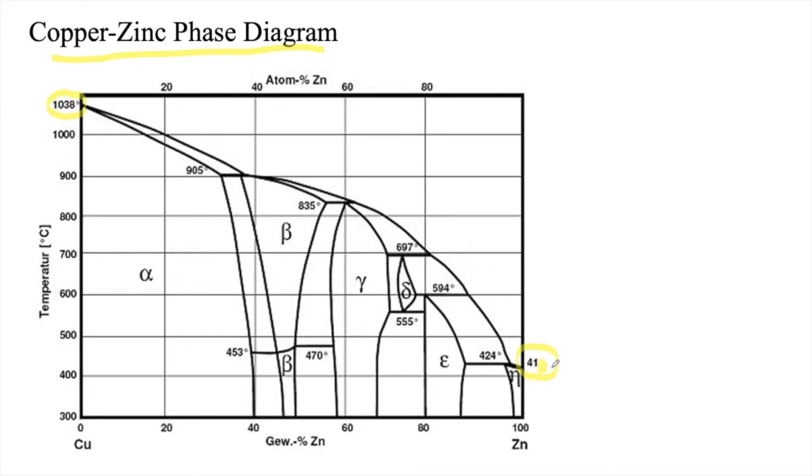The system contains what we call as brass and is typically more in the copper-rich side.